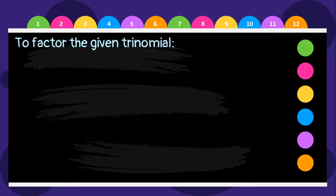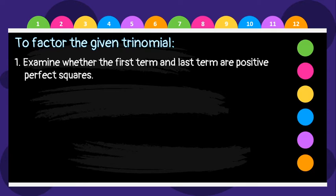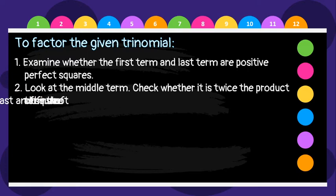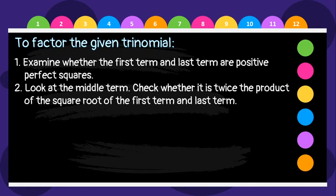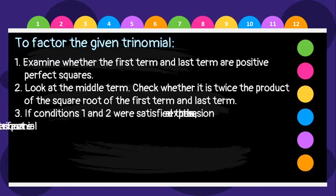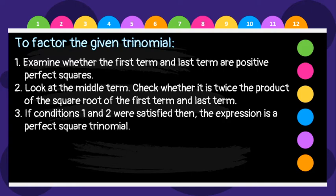To factor a given trinomial, first examine whether the first term and last term are positive perfect squares. The first and last terms must be positive perfect squares. Second, look at the middle term and check whether it is twice the product of the square roots of the first and last terms. Third, if conditions 1 and 2 are satisfied, then the expression is a perfect square trinomial.